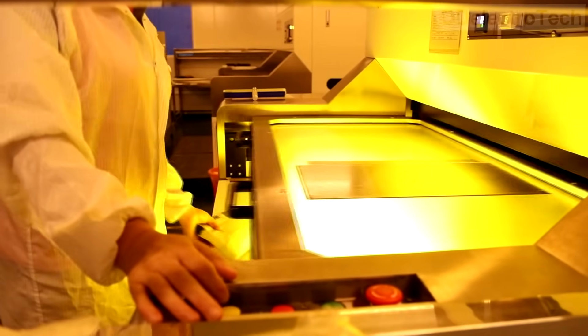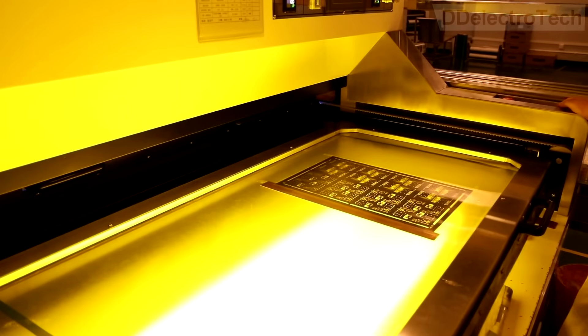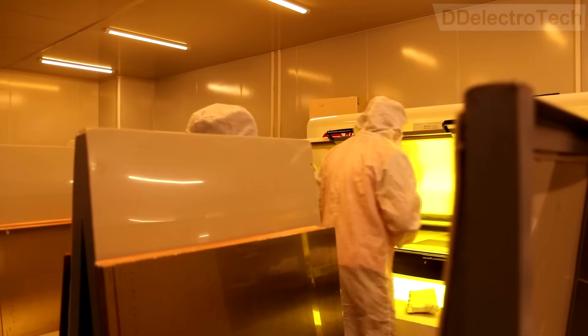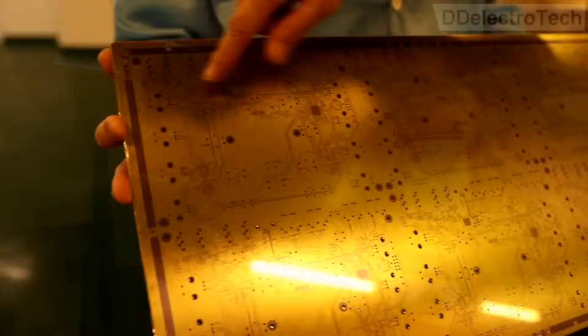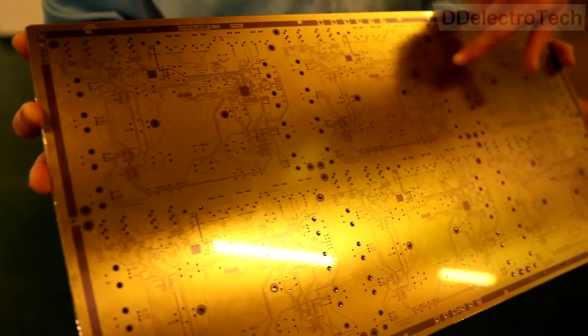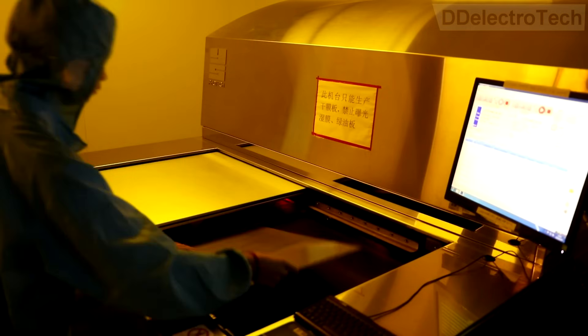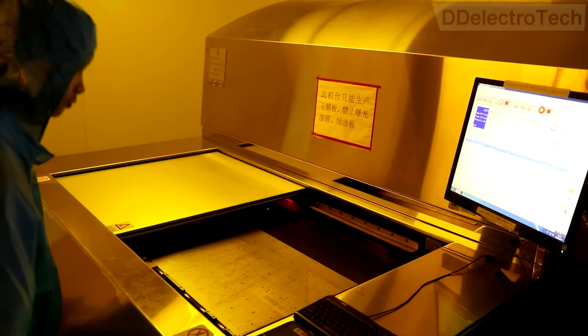...the board is sent to the printer. The printer uses powerful UV lamps to harden the photo-sensitive film according to the circuit printed film. So after this process, only the circuit part is hardened and the rest of the unwanted areas remain soft. Modern machines can do this whole process automatically.